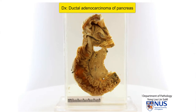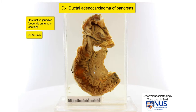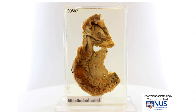If this causes significant obstruction of the common bile duct, the patient may present with obstructive jaundice. Otherwise, this may actually present quite late with just very general symptoms of loss of weight or loss of appetite. Sometimes there may also be a vague abdominal pain that may radiate to the back. The prognosis of ductal adenocarcinoma of the pancreas is usually poor, partly due to its late clinical presentation.